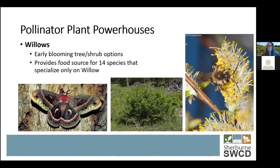The next couple of slides focus on pollinator plant powerhouses — native plants that provide a huge swath of benefits for a wide variety of pollinators. Starting in the spring: willows. There are a wide variety of willows — some can handle drier soil like prairie willow, while most willows like pussy willow and sandbar willow are typically seen on wetland edges and along shorelines. They're a really early-blooming shrub, providing pollinator resources for early emerging pollinators, and providing food source for 14 species that only specialize on willow. They're also a larval host for many moth species.